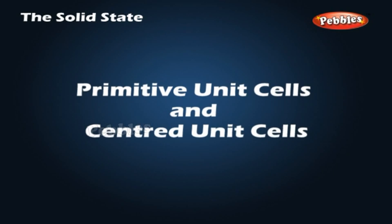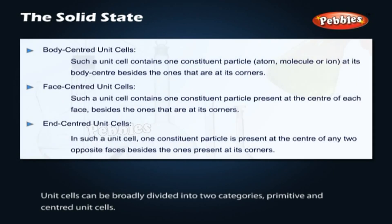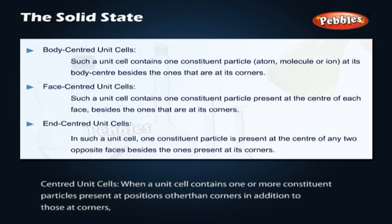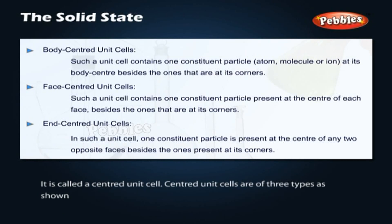Unit cells can be broadly divided into two categories: primitive and centered unit cells. When constituent particles are present only on the corner positions of a unit cell, it is called a primitive unit cell. When a unit cell contains one or more constituent particles present at positions other than corners in addition to those at corners, it is called a centered unit cell. Centered unit cells are of three types as shown.